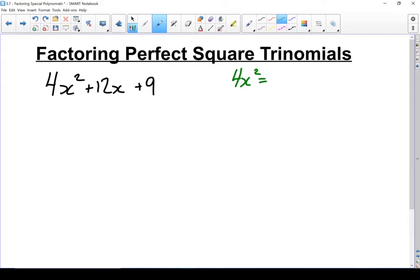4x squared equals 2x times 2x. My third term is also a square. They're both positive.